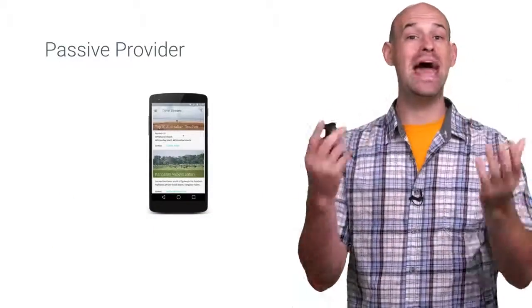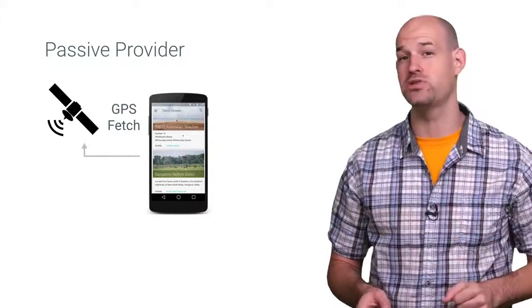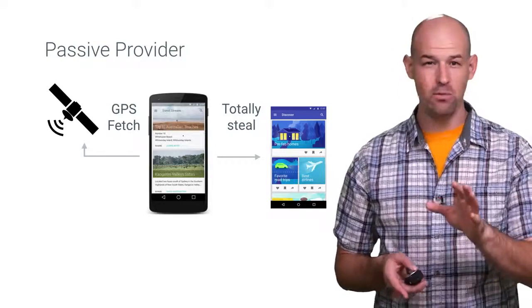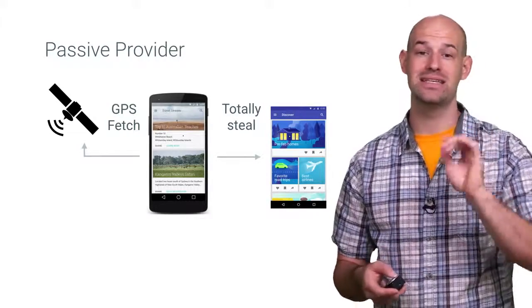And of course, there's the passive provider which is probably the most battery efficient. When some other application makes location requests, the results then get passed along to your app as well. That way, your device isn't sending out multiple location pings and can spend more time saving battery.